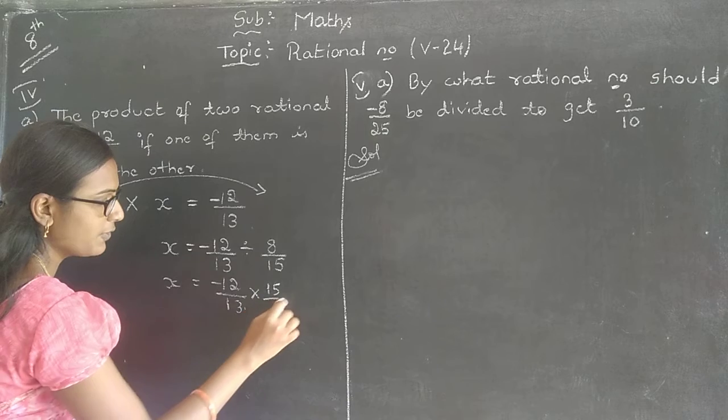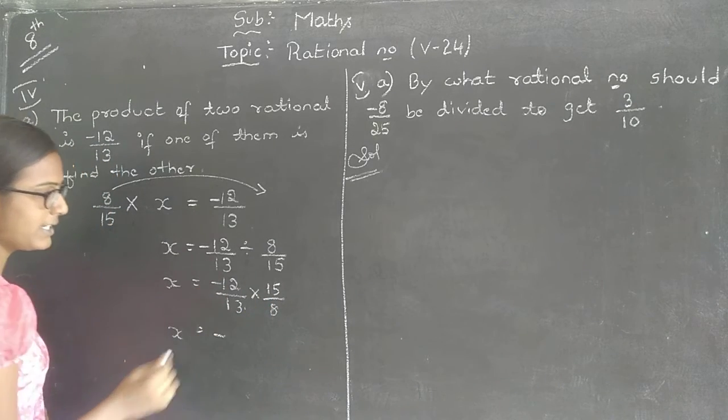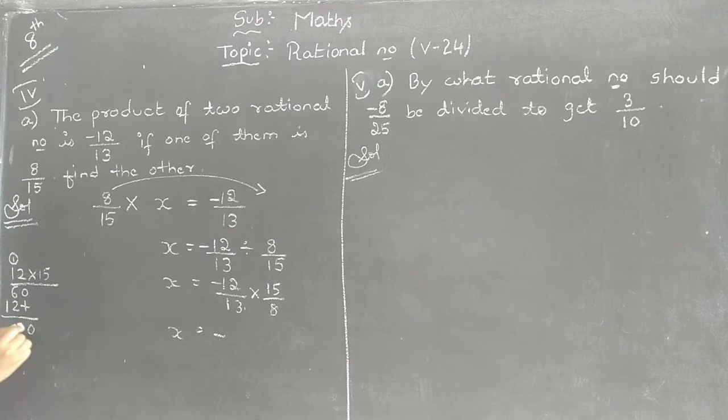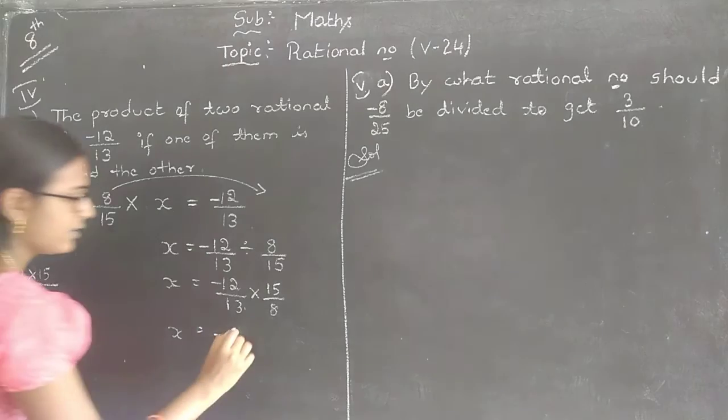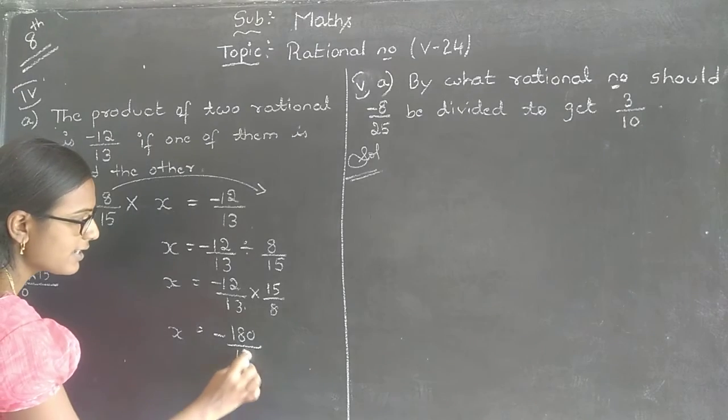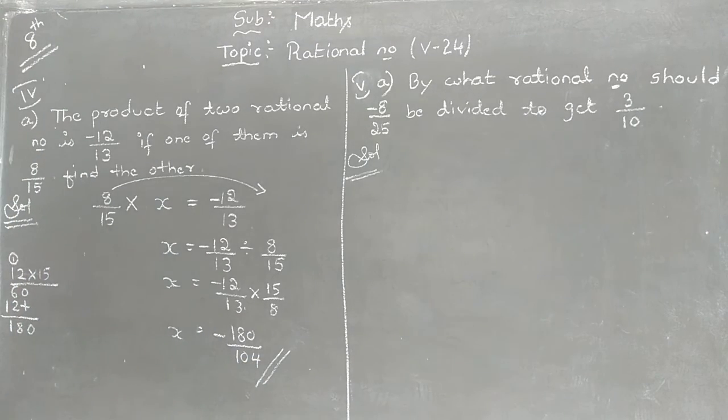Division symbol should be changed into into and take the reciprocal of second number. 8 by 15, it will become 15 by 8. x is equal to minus 12 into 15. Let me multiply it. 12 into 15. 5 2 is 10, 1 carry. 5 1 is 5, plus 1 is 6. 1 2 is 2, 1 1 is 1. 180. So, minus 180 divided by, 13 8 is 104. So, the solution for this problem is minus 180 divided by 104.